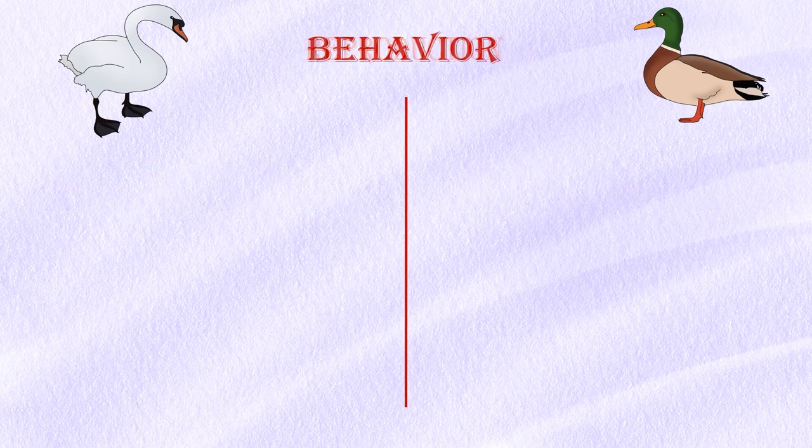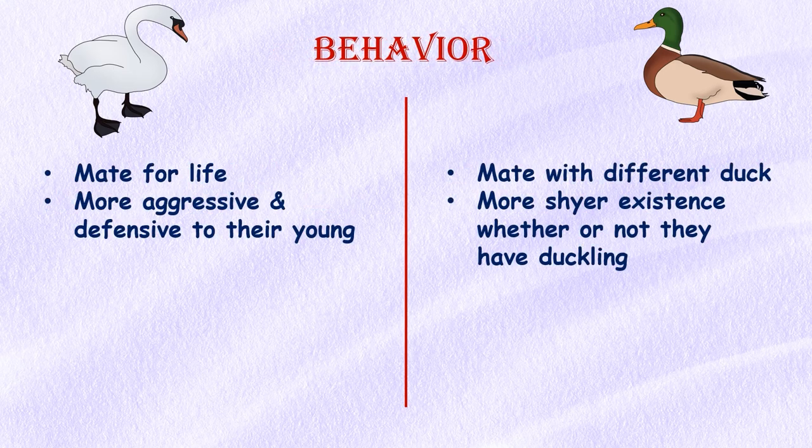Behavior: Swans mate for life, while ducks do not. Ducks mate with many different ducks during their breeding season, while swans seek out commitment and raise their young with the same partner. Swans are much more defensive and aggressive of their young compared to ducks, who prefer a shyer existence whether or not they have ducklings.